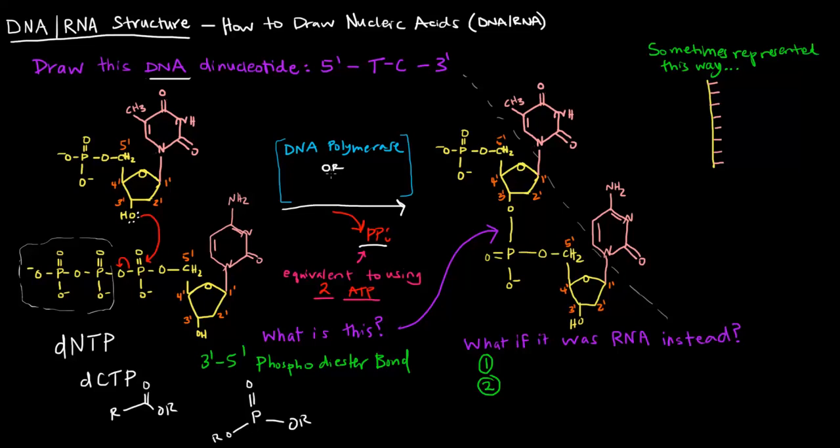Now, I wrote this OR here, and I don't want this to confuse people. But if these were ribonucleotides, then it would have been done by RNA polymerase. So I'm going to put a little asterisk here. And that would only have been if these were ribonucleotides.